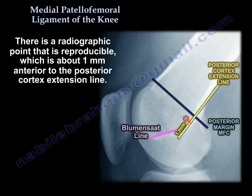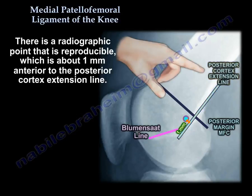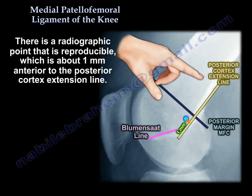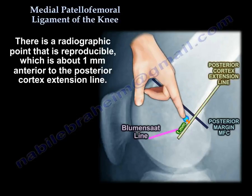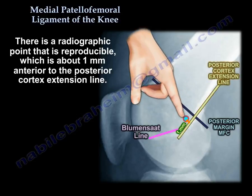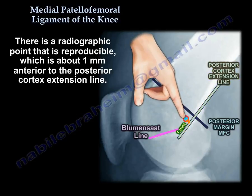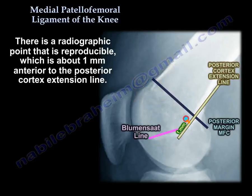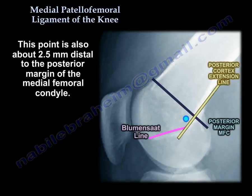This is the posterior cortex — you make an extension line of the posterior cortex, and the ligament origin is about 1 mm anterior to that. It is also about 2.5 mm distal to the posterior margin of the medial femoral condyle.